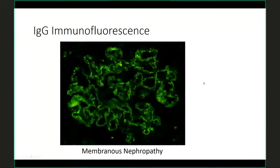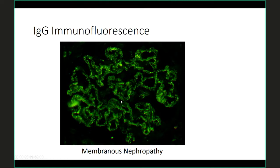Then you do the immunofluorescence. On immunofluorescence staining for IgG, you can see something lining the glomerular basement membrane — there are deposits of immunoglobulin lining it. If we stained for C3, that would probably also be positive.